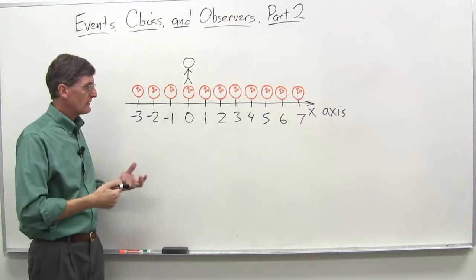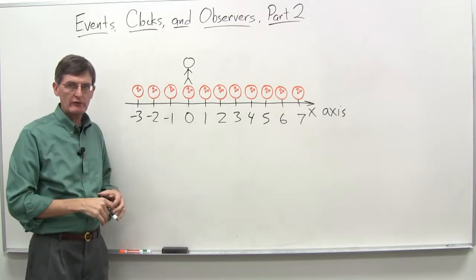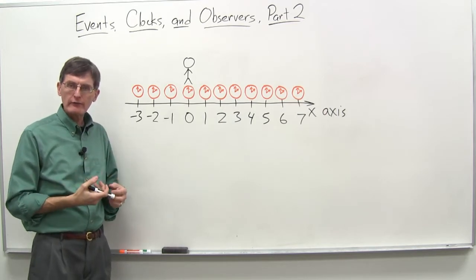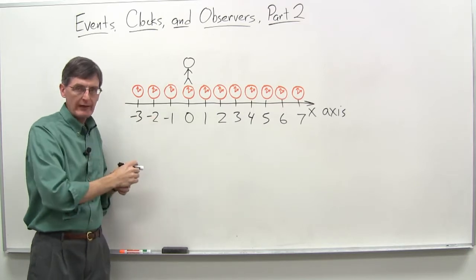Alright, we ended the last video clip, which was on part one of Events, Clocks, and Observers. We are talking about a lattice or a grid of clocks that we're going to use to specify when something happens.